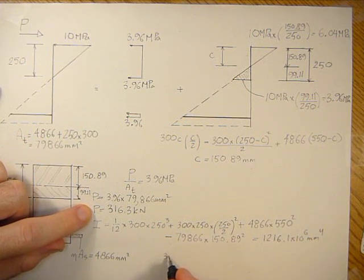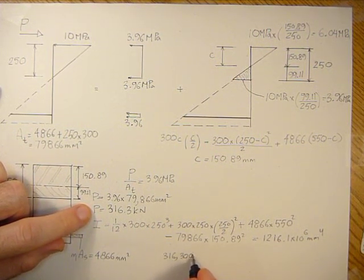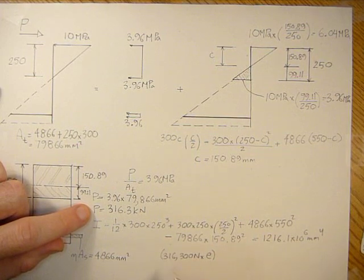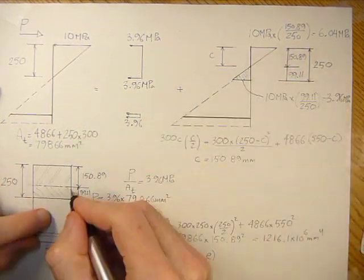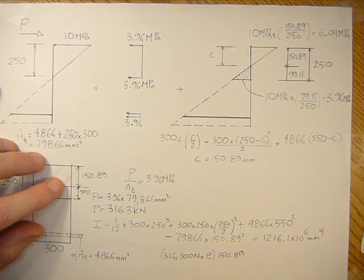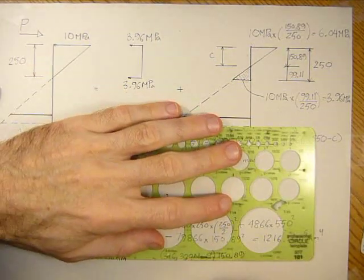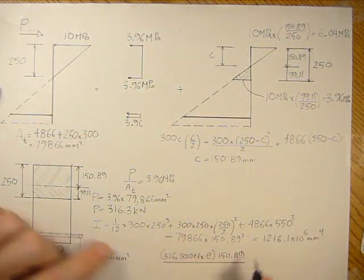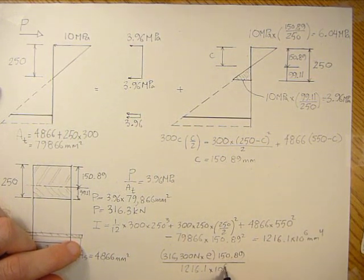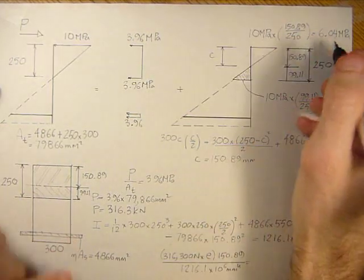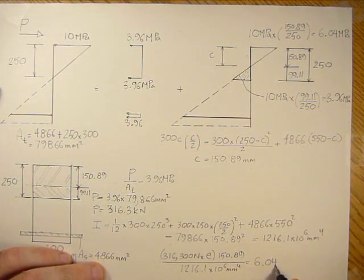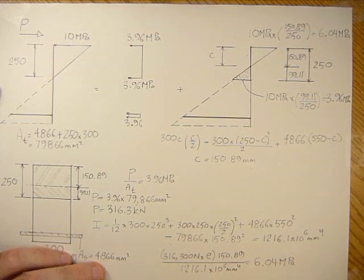P times e, which is an unknown, and P times e is the moment, times y which is the distance from the neutral axis up to the extreme fibers in bending, which is 150.89. So that's M*Y over I, and we've calculated I as 1,216.1 times 10 to the 6 millimeters to the 4th. This has to equal the stress from here to here, which is 6.04 MPa.